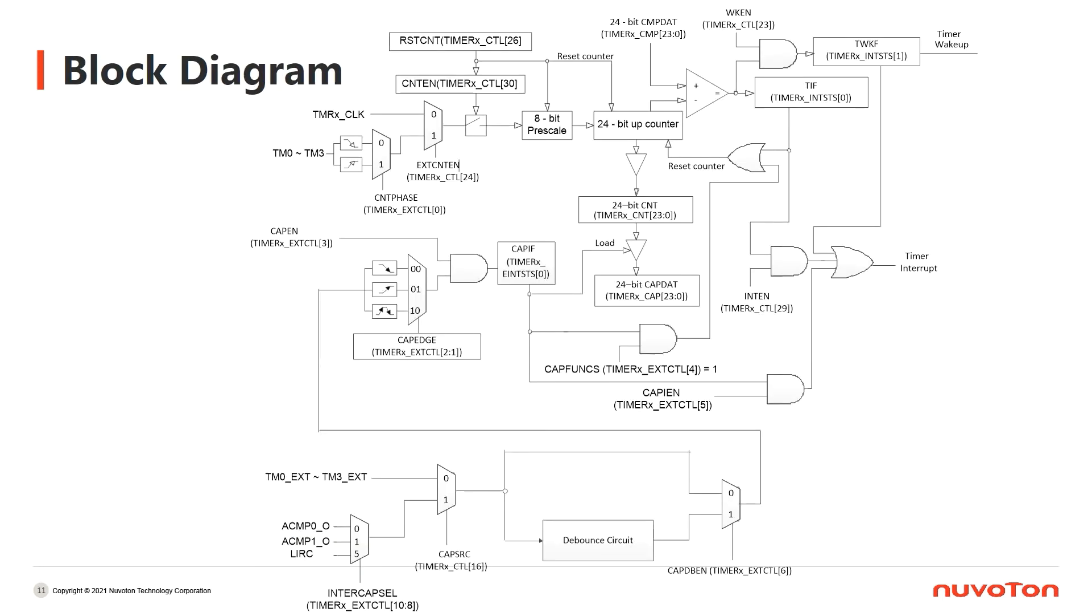We have seen a simplified block diagram before. Now, this is the complete block diagram of M031 and M032 series timer. This block diagram could be divided into two parts. One part is the timer counting mode. The other part is the event counting mode. For the timer counting mode, first of all, we have to set the clock source.